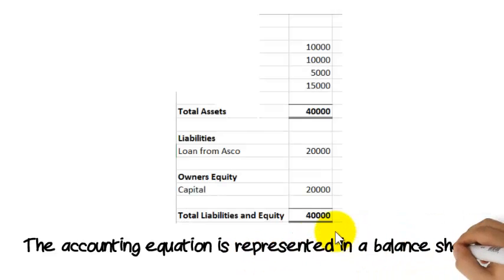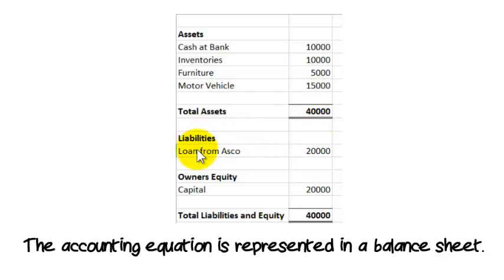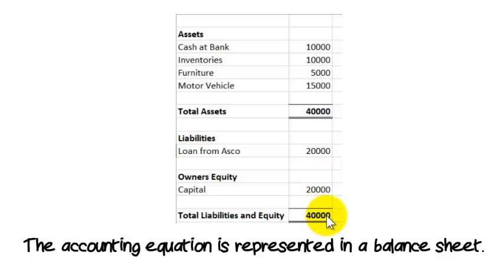The accounting equation is represented in a simple balance sheet, as you can see, and that'll be the next lesson. Assets here are $40,000, equal to liabilities of $20,000 and owner's equity of $20,000 — so $20,000 plus $20,000 equals $40,000. We're going to come back to the balance sheet in the next lesson.